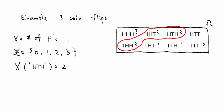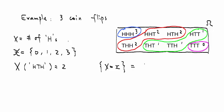This is a set of outcomes for which the random variable gives them the label 2. And this is another set of outcomes labeled 3. And here, this is the set labeled 1, and this is 0. So we can think of X equals x, for any value, as referring to a set of outcomes.